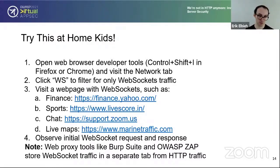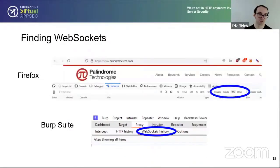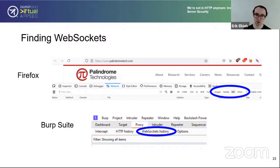A few example websites are listed based on different use cases for WebSockets — you can visit whichever you'd like. After the web page loads, you'll see some WebSocket traffic in your browser developer tools. Web proxies like Burp Suite and OWASP ZAP will also capture this traffic, but these tools show the WebSocket traffic in a separate tab from the HTTP traffic. In Firefox, there is a WS button to filter WebSocket traffic, and in Burp Suite, the WebSockets history tab is separate from the HTTP history tab.